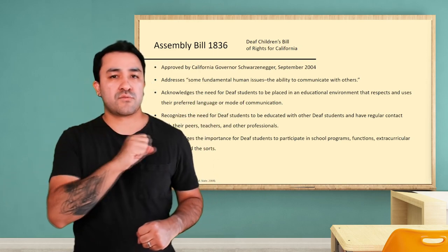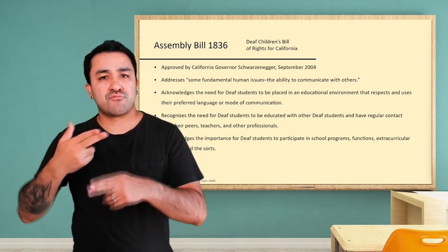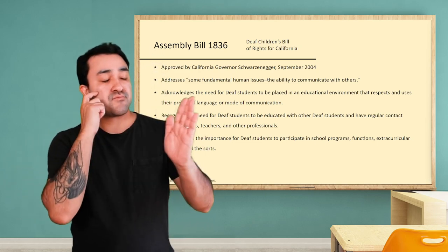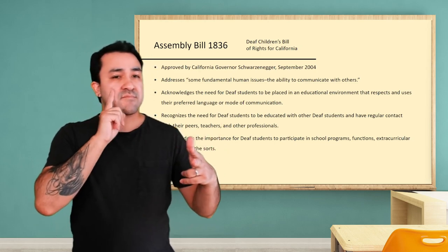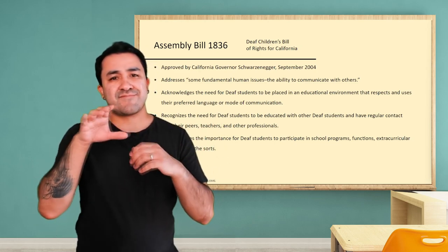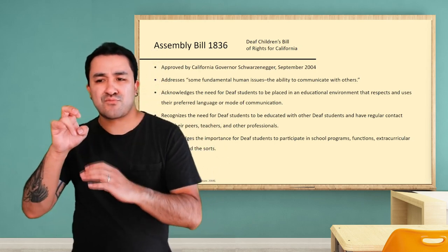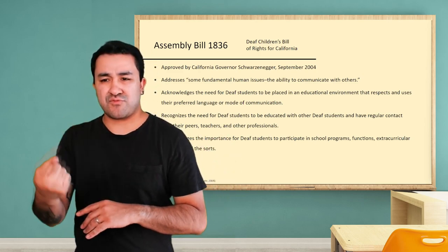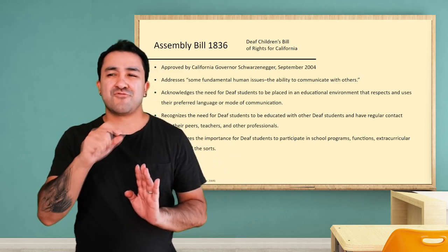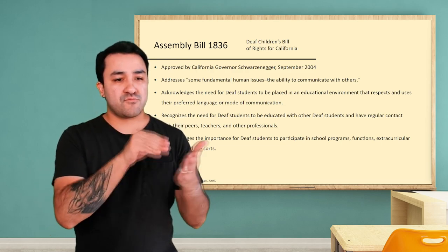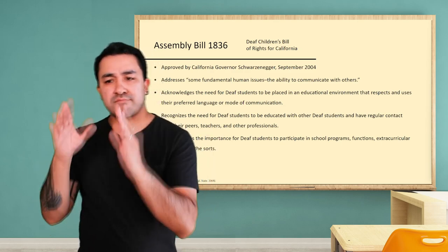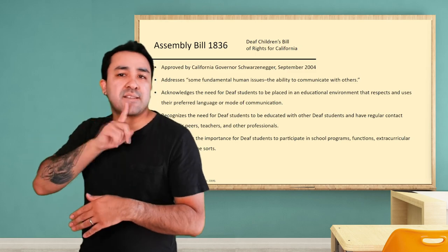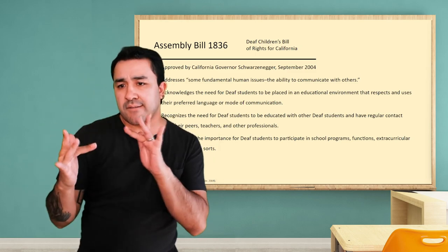Passed in 2004 by Governor Schwarzenegger, this law recognized several things. First, educators must place deaf students in an educational environment that respects and uses their preferred language or mode of communication. Second, deaf students must be able to have regular contact with deaf peers, teachers, and other professionals.